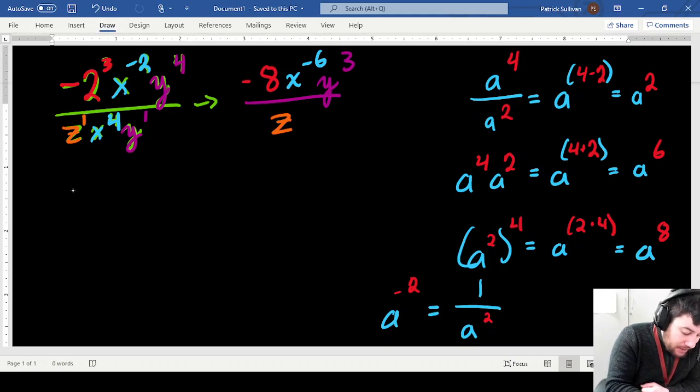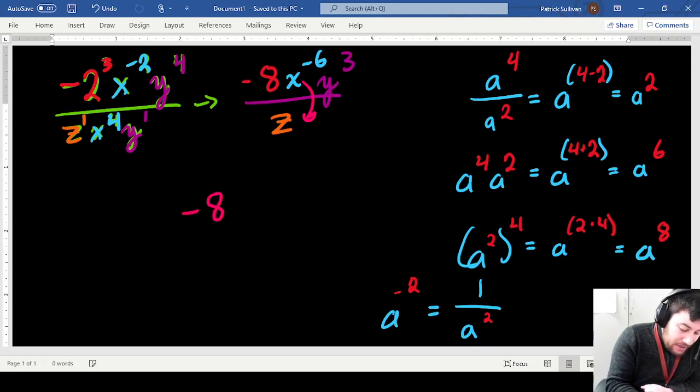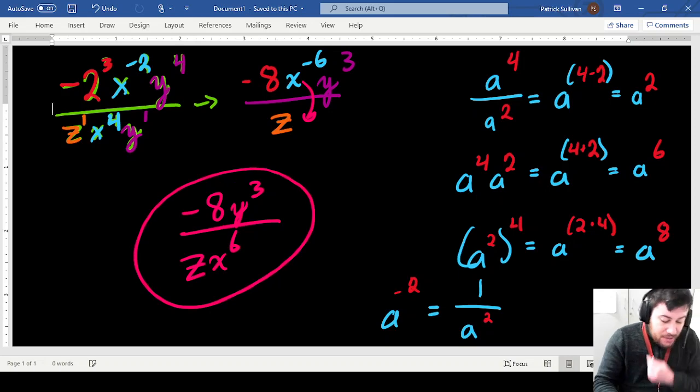So in order to fully simplify it, I need to bring it to the denominator on the opposite side of the fraction bar, and then its exponent becomes positive. So then my final answer should be negative 8 times y to the third all over z times x to the sixth. And that's my final answer.